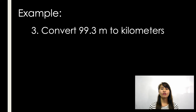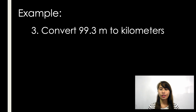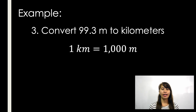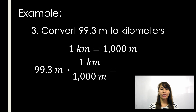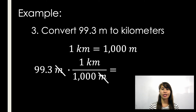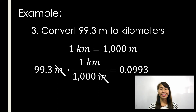Next example: convert 99.3 meters to kilometers. Since meters is smaller than kilometers, it is smaller to bigger, so we divide. 1 kilometer equals 1,000 meters. Copy the given: 99.3 meters times 1 kilometer divided by 1,000 meters — cancel meters — and our final answer is 0.0993 kilometers.